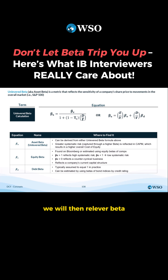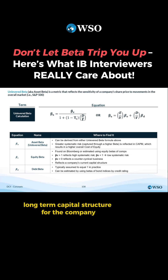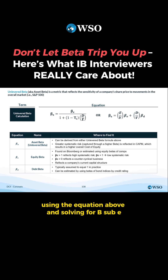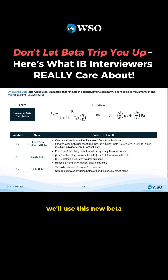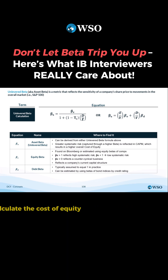We will then relever beta with our assumed long-term capital structure for the company, once again using the equation and solving for B sub E. Since this relevered beta now reflects our proposed long-term capital structure, we'll use this new beta in our capital asset pricing model to calculate the cost of equity.